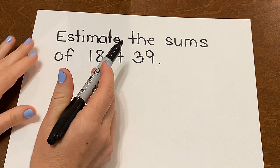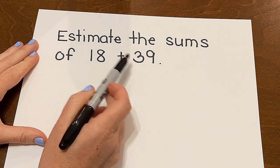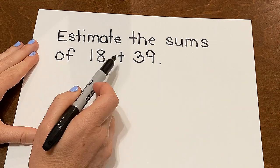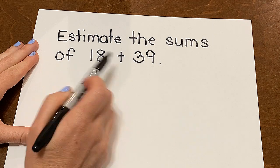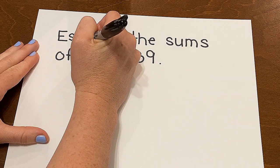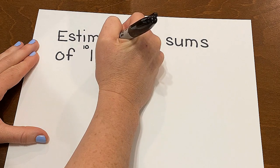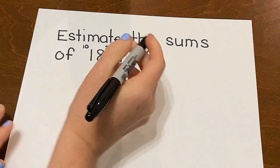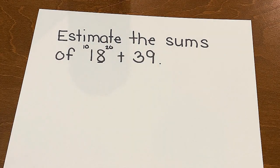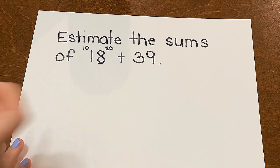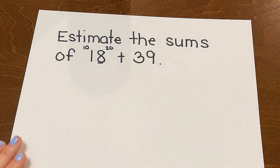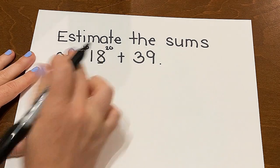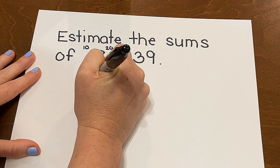We need to think about what 18 would round to — what is it closest to? Counting by tens: 10, 20, 30, 40, 50, 60, 70, 80, 90, 100. 18 falls somewhere between 10 and 20. So 8 is the ones place, and I have to think: 0 through 4, hit the floor; 5 through 9, climb the vine. 18 is clearly closer to 20. So my first addend for my estimation is going to be 20.